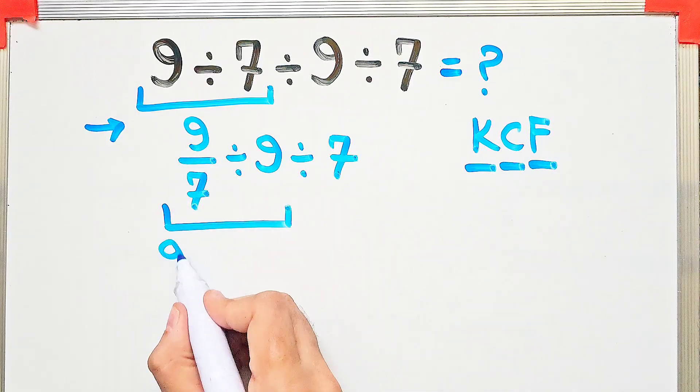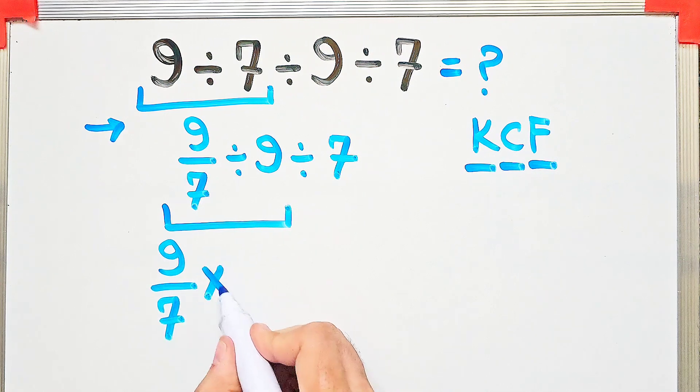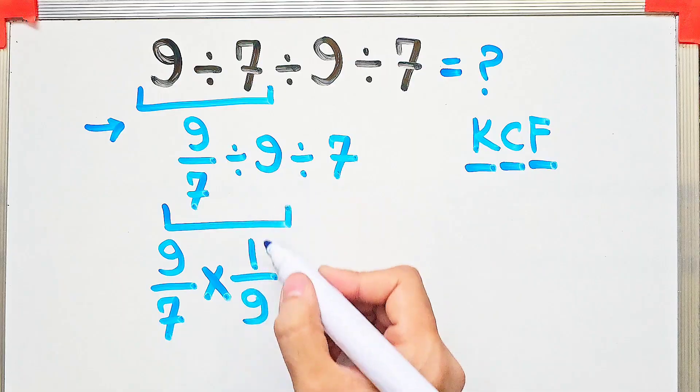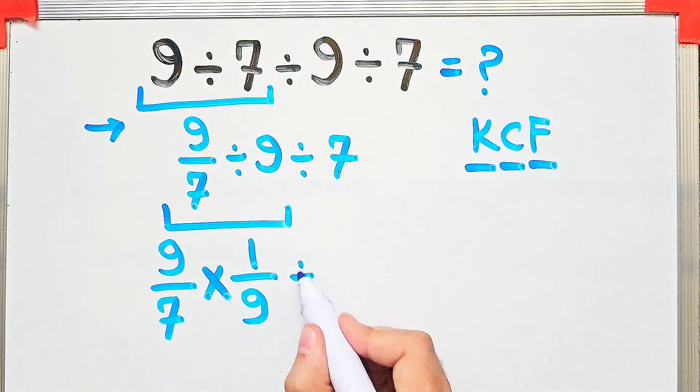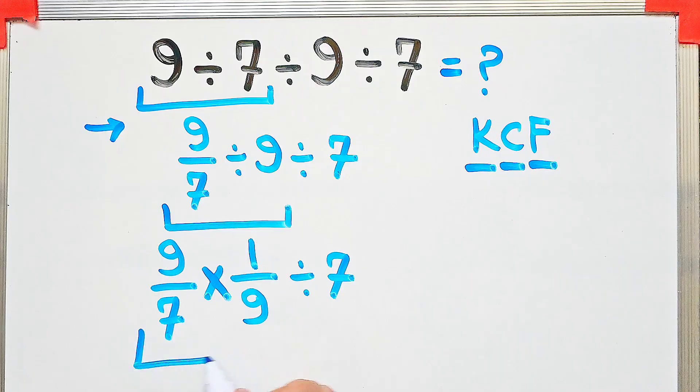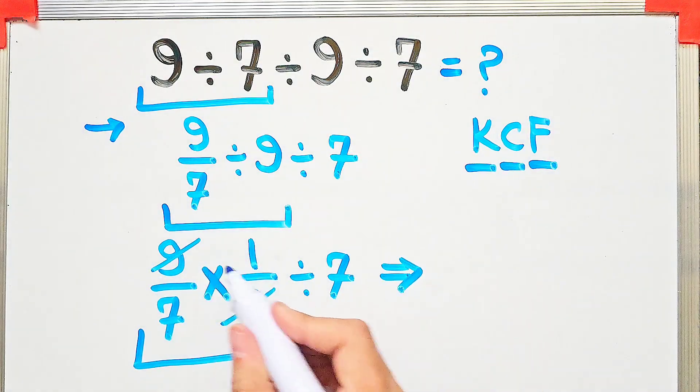We keep the first fraction as it is. After that, we change the division sign to the multiplication sign, and after that, we flip the second number. Now we have a new expression. In this step, the 9s cancelled out and we simplify this part. The answer of this part equals 1 over 7.